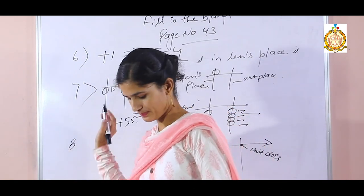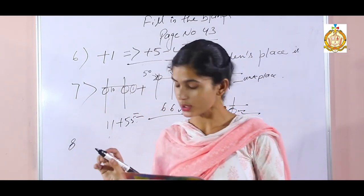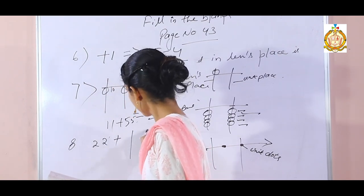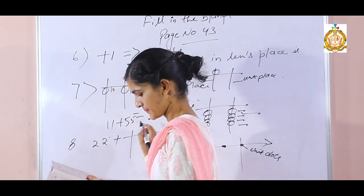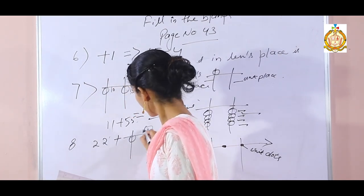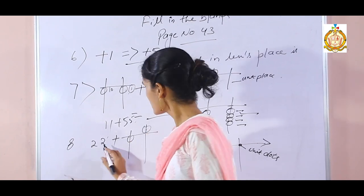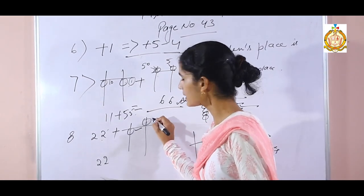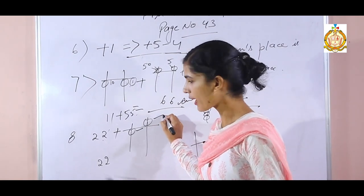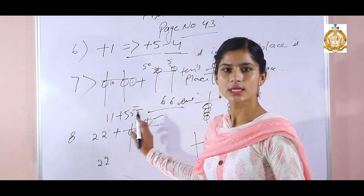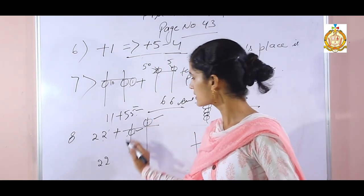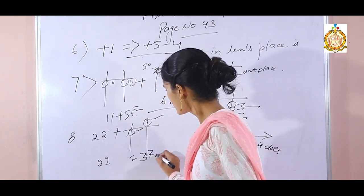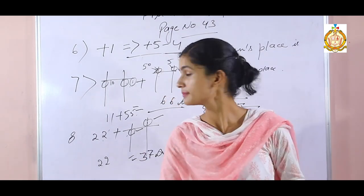Eighth fill-in: 22 plus — the bead indicates 10, and another bead indicates 5. So 22 plus 10 is 32, and 32 plus 5 is 37. The answer is 37.